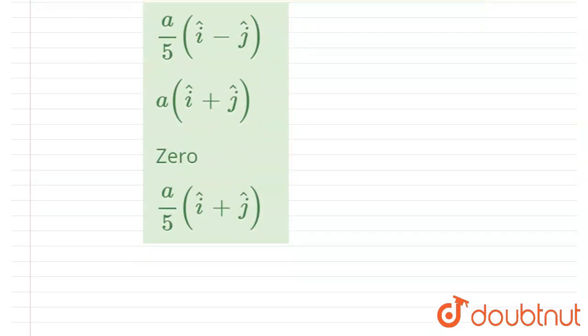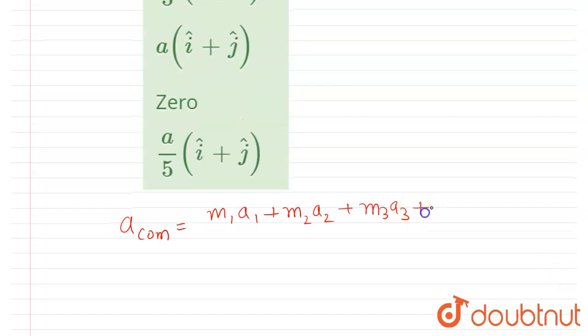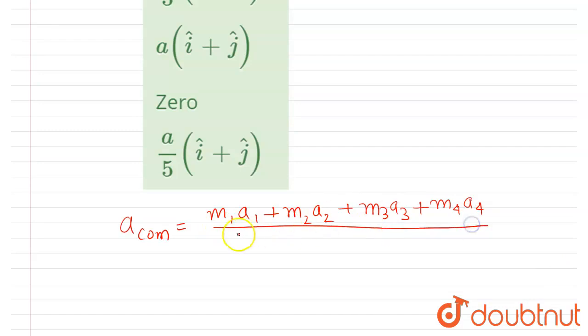m₁a₁ plus m₂a₂ plus m₃a₃ plus m₄a₄ in division, I will write m₁ plus m₂ plus m₃ plus m₄. So this is the acceleration of the center of mass.